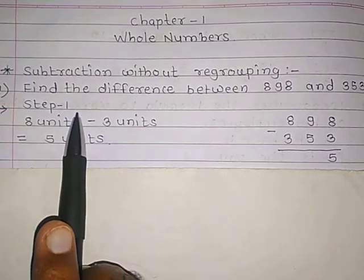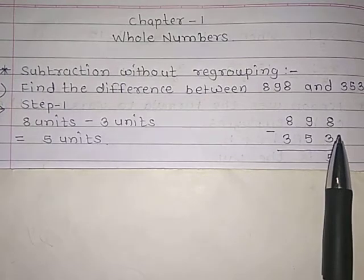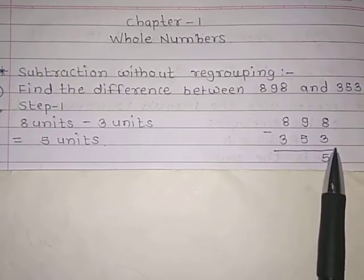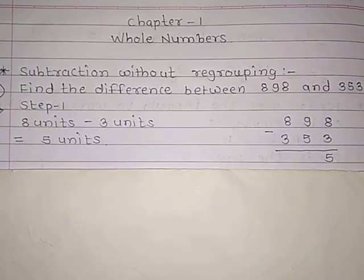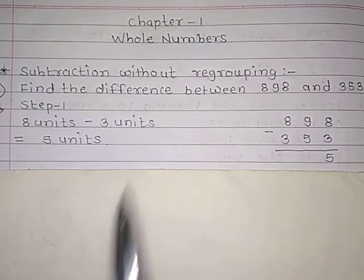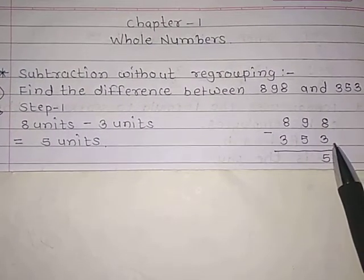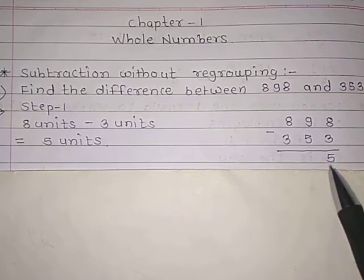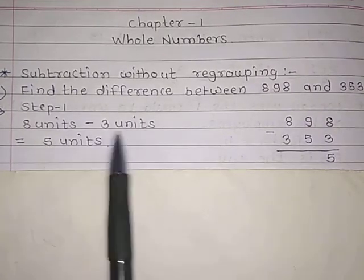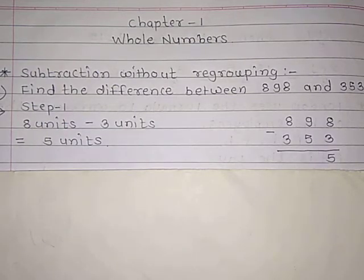Step 1: First of all we have to arrange the numbers 898 minus 353. Now, 8 units minus 3 units — we have to calculate 8 minus 3, which are in the unit place. So 8 minus 3 equals 5. That is 8 units minus 3 units equals 5 units.